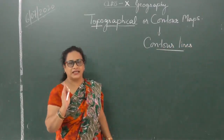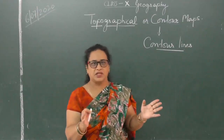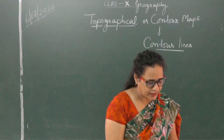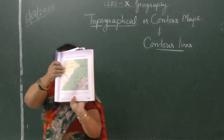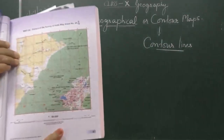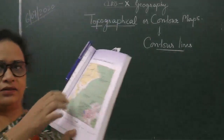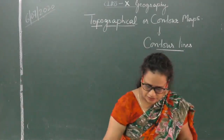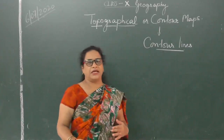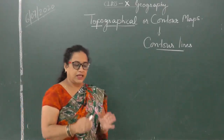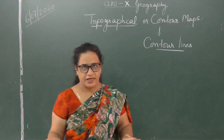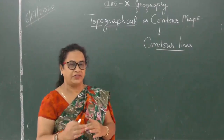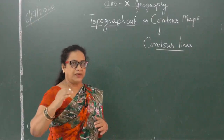Now everybody has seen atlas maps — you know what a map of North America or India looks like. Topo maps look different from those. In your total geography book, you have sample topo maps at the back, right at the end. Those are the ones from which we will be practicing question answers. In the beginning when you look at these maps it does not make any sense, but slowly as you learn how to read the map, everything will become clear.